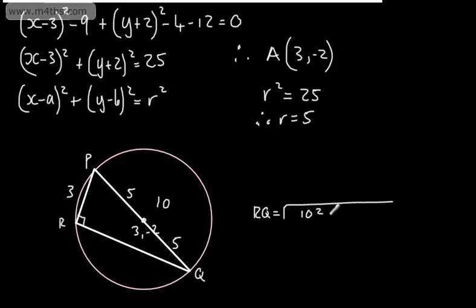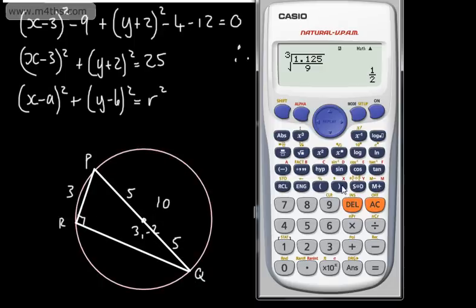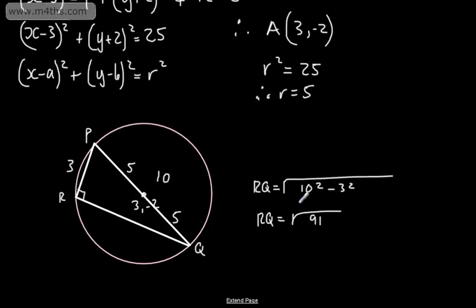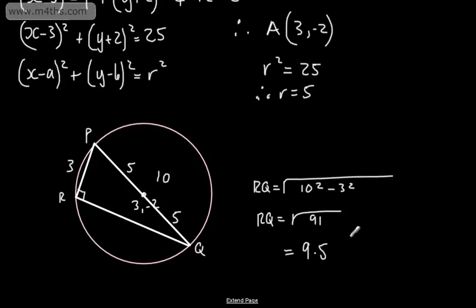So 10 squared minus 3 squared gives us RQ equal to the square root of 91. We give this to one decimal place — the square root of 91 is 9.5 to one decimal place. So all we've done is use a bit of circle theorem and Pythagoras theorem.